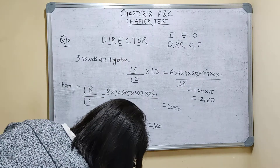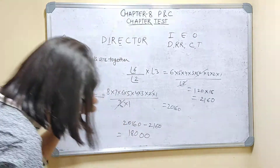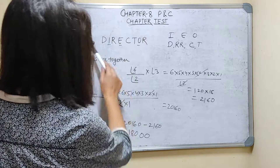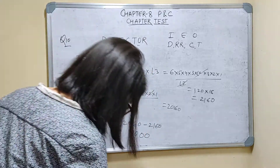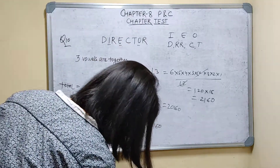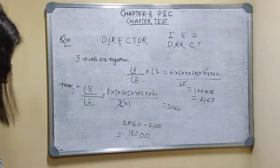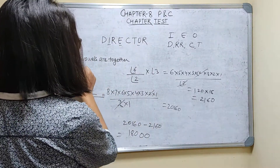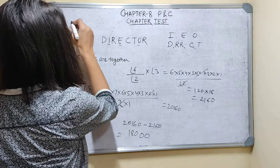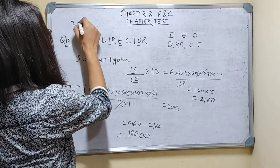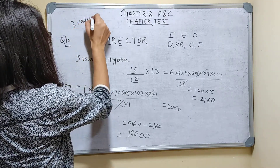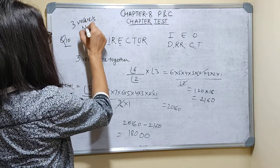Question number 10. In how many ways can the letters of the word DIRECTOR be arranged so that all the three vowels are never together?